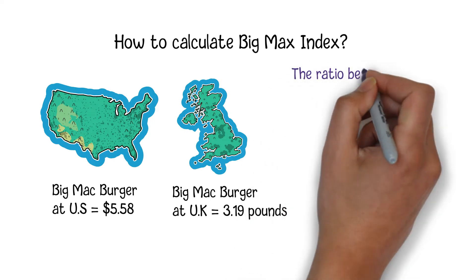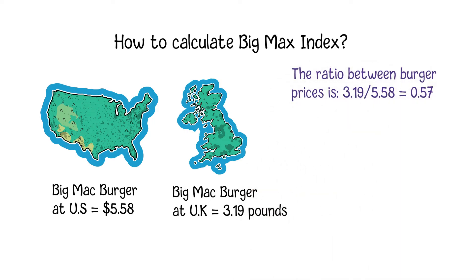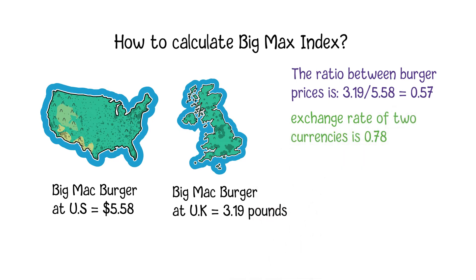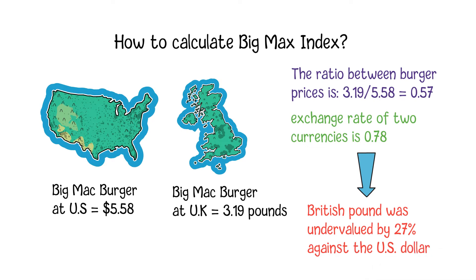The ratio between those prices is 3.19 divided by 5.58, which is equal to 0.57. At the same time, the exchange rate of the two currencies is 0.78, which means the British pound was undervalued by 27% against the US dollar. There is no complex mathematical calculation, but everyone can roughly see which currencies are currently undervalued or overvalued.